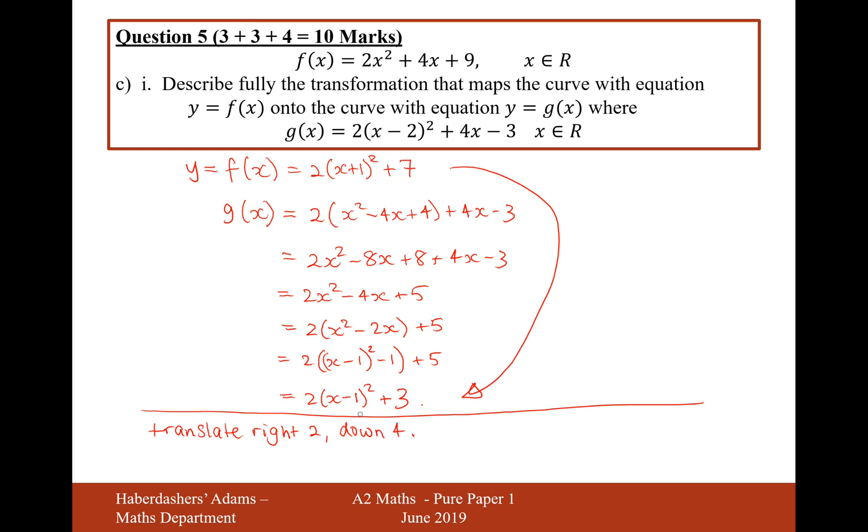So that's the answer for part i. We can tell that because this g of x graph here will look like this thing here where it has a minimum point at 1, 3, and the f of x function looks like this thing here where it had minimum points minus 1, 7. And it's going to be exactly the same shape of the graph because it's got a 2 at the front of both of them. So it's just going to be translate right by 2, down by 4.